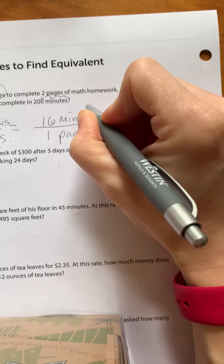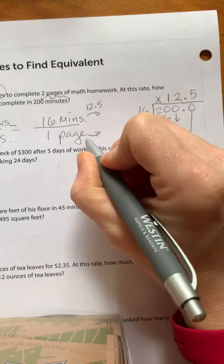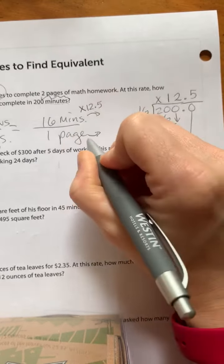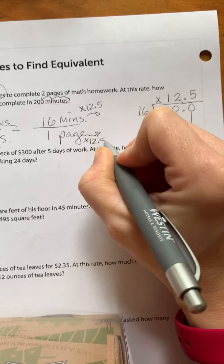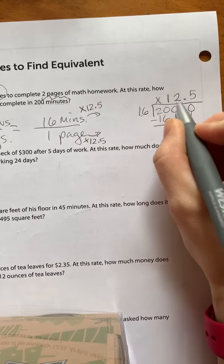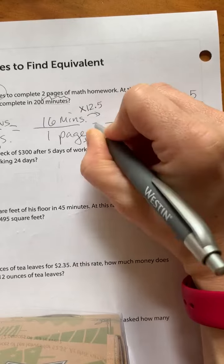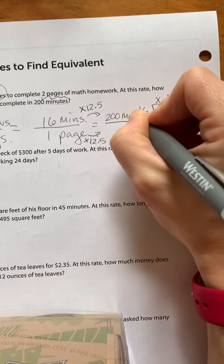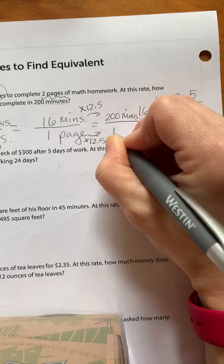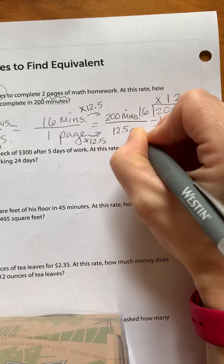All right, so we're going to multiply both of these by 12.5, because we know 16 times 12.5 is 200. So in 200 minutes, this person can read 12.5 pages.